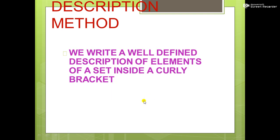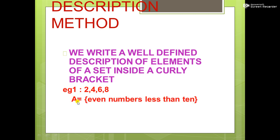Description method: we write a well-defined description of elements of a set inside curly brackets. For example, the numbers 2, 4, 6, 8 — we represent this as A = {even numbers less than 10}. Inside the curly bracket, a well-defined description is written: 'even numbers less than 10.' This is the representation of a set using the description method.